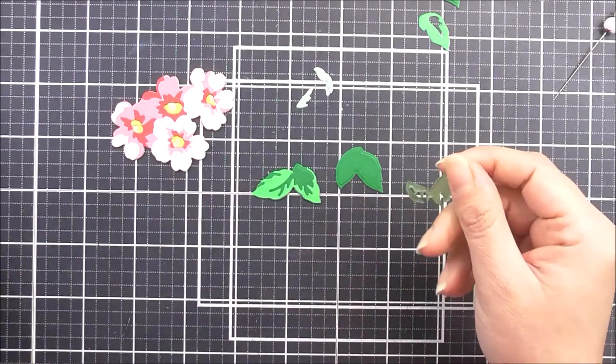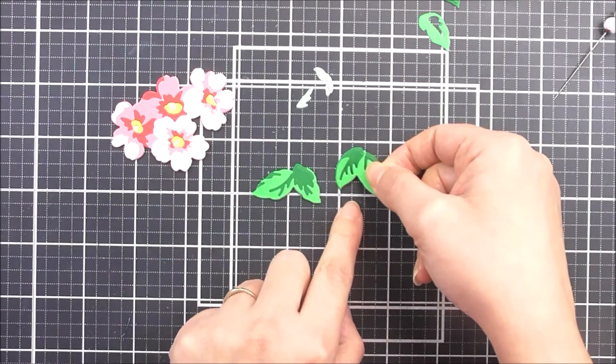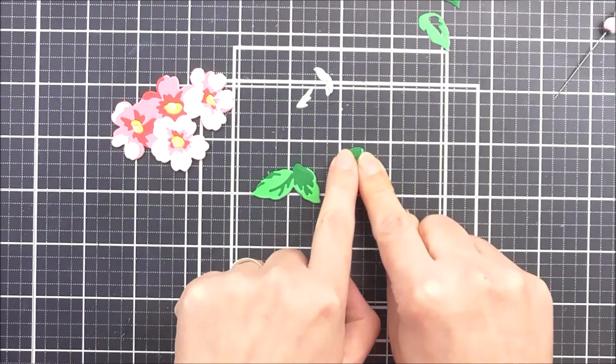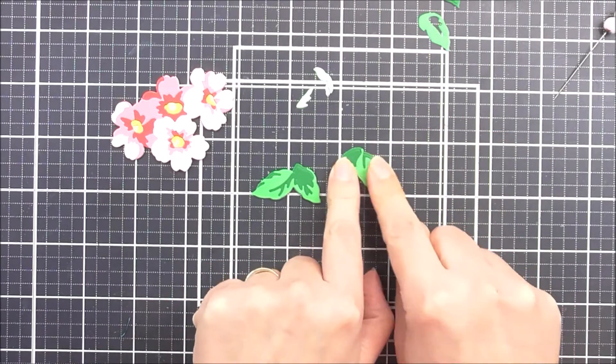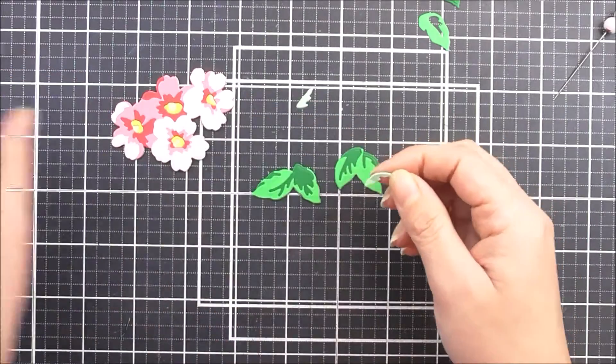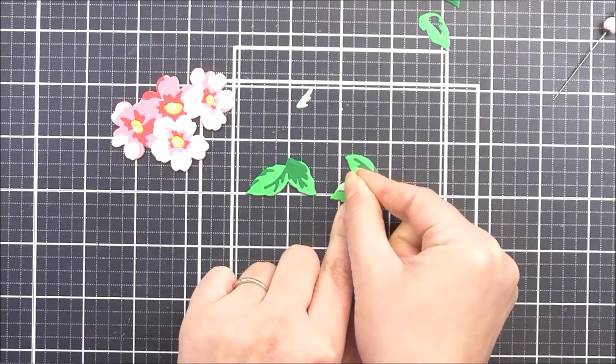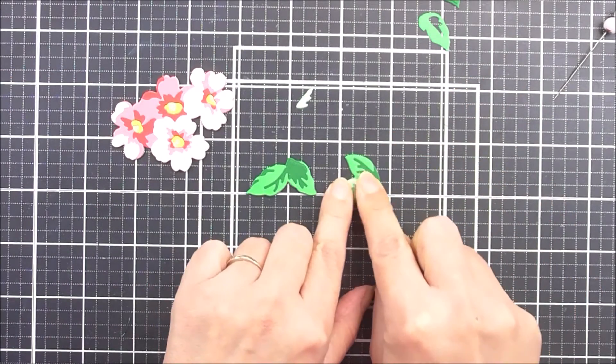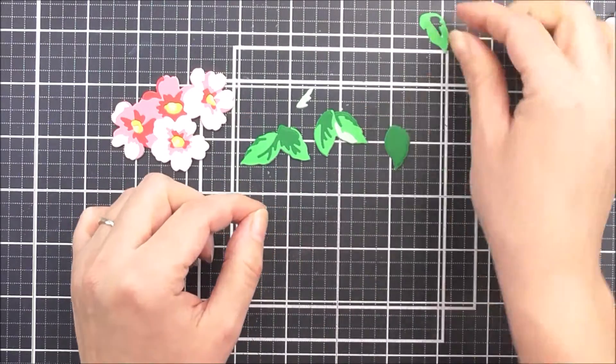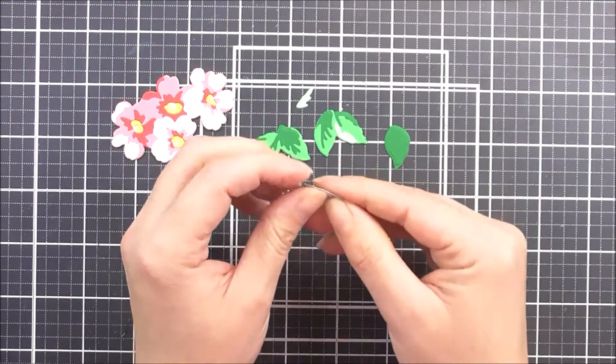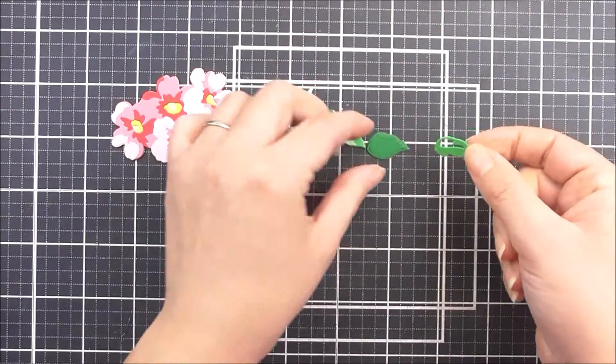Before I cut all of the dies, I added double-sided adhesive to the back of the cardstock to make it really easy to pop these together and really quick too. This one has a little bit of a highlight. This was cut from the Firefly cardstock and I'm just going to pop that into place using the layering guide on the die to make sure I have it in the right place.